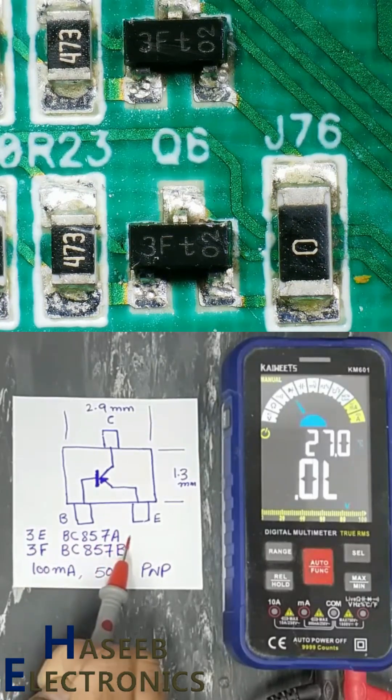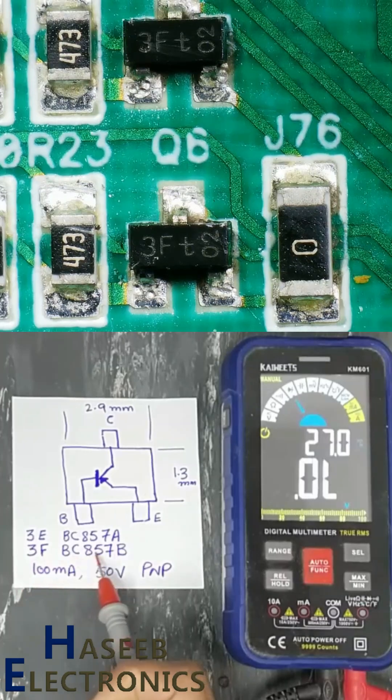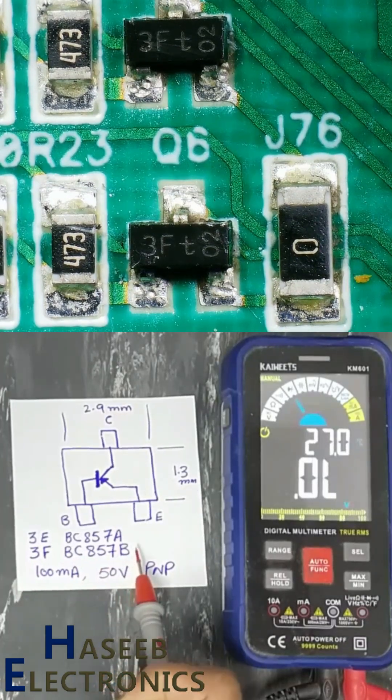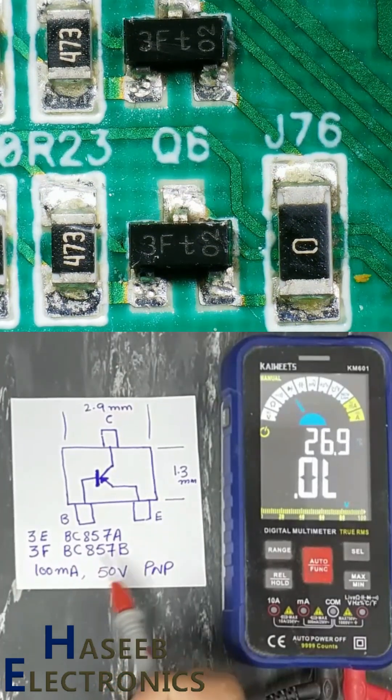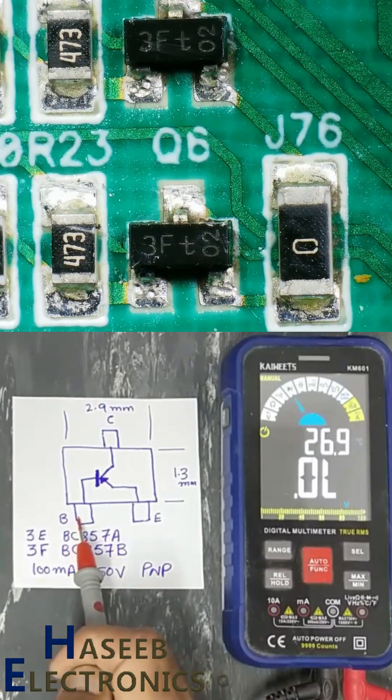Its gain is 90. If marking is 3F, that is BC857B. Its gain is 150, 100mA, 50V PNP transistor. Base, collector, emitter.